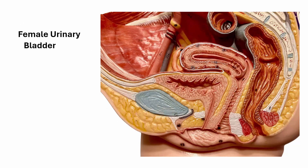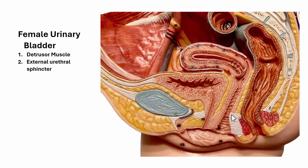In the female urinary bladder, located here, above it is the uterus. We also have the detrusor muscle. The external urethral sphincter is in this area, part of the urogenital diaphragm, and is skeletal muscle. The internal urethral sphincter, which is smooth muscle, is in this area here. And then we have the urethra.